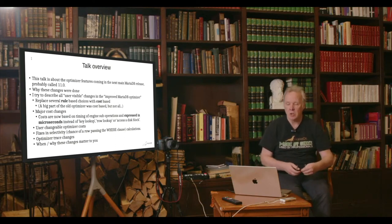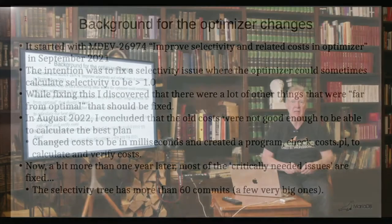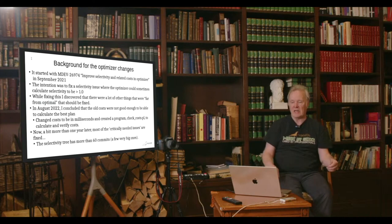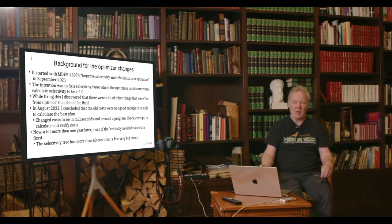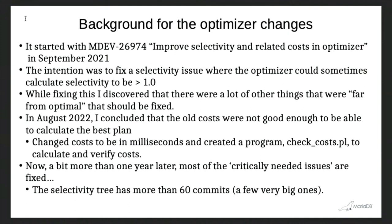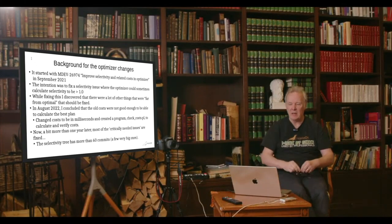Starting with the background: in September last year I decided that we have some issues with selectivity that needed to be fixed. Our optimizer team needed more resources, and I thought that since I wrote the initial code, some things can be blamed on me, so let's try to get this done. The issue was that sometimes the selectivity the optimizer created was bigger than one, which basically means you get wrong results. While fixing it I noticed that there are a lot of things in the optimizer that have been changed over the years — lots of good things done here and there — but the integration of those left something to be desired.